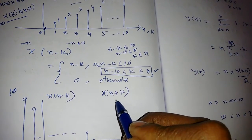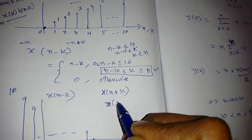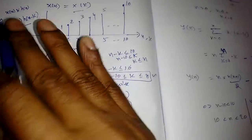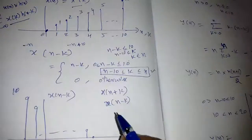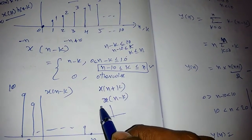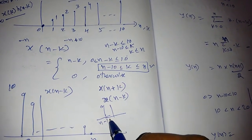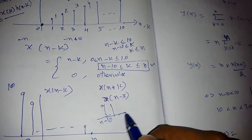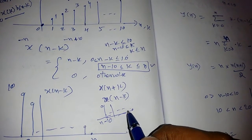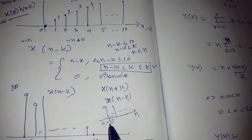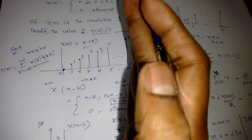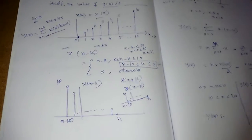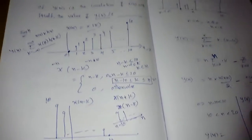For x[n-k] we perform a reversal of x[n+k]. After reversal, n-10 replaces -n+10 and n replaces -n, so the signal spans from n-10 to n. We first shift left, then reverse — that gives us the x[n-k] signal.